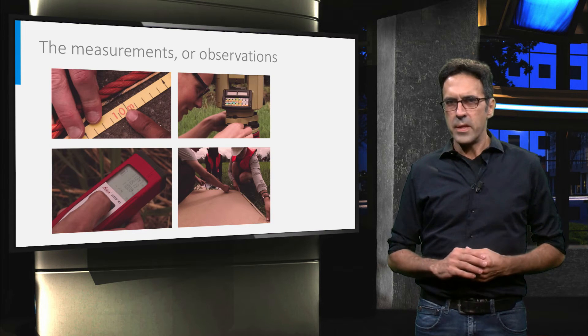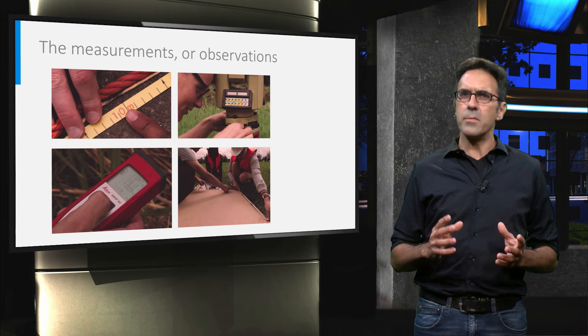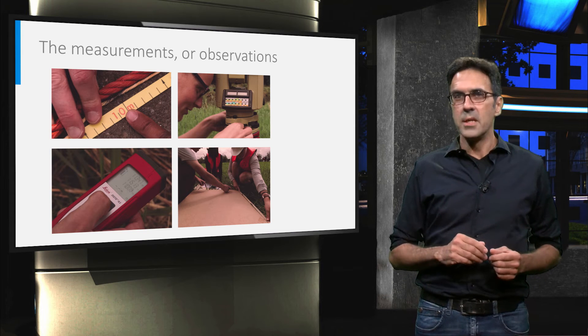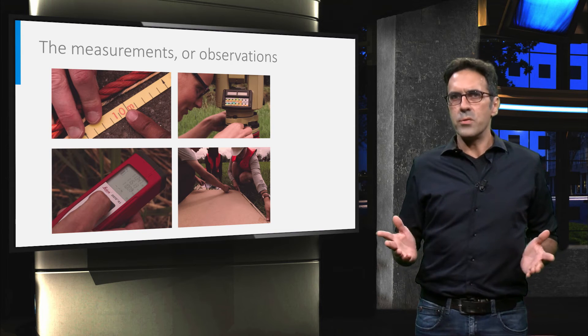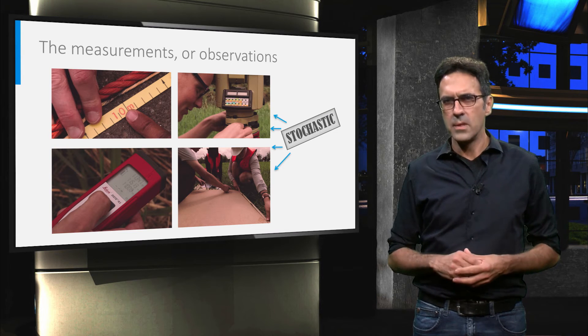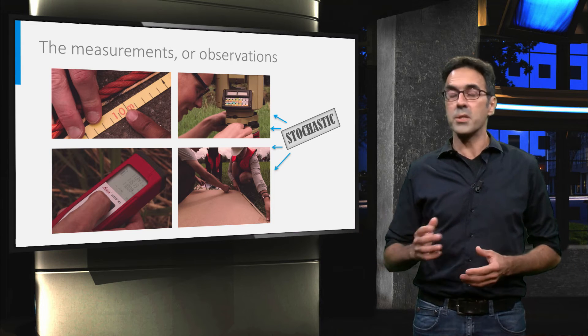The measurements that the students performed are not deterministic. Repeating the measurement several times with different instruments, perhaps even by other observers, will typically yield different values. We call this type of variable stochastic. Their value will be drawn from a certain distribution. This will be discussed in the next videos.